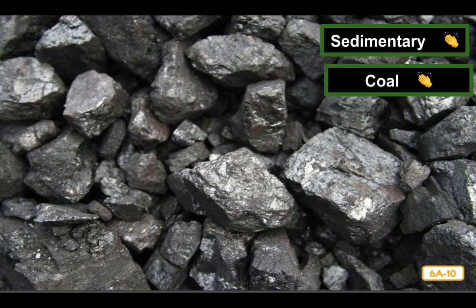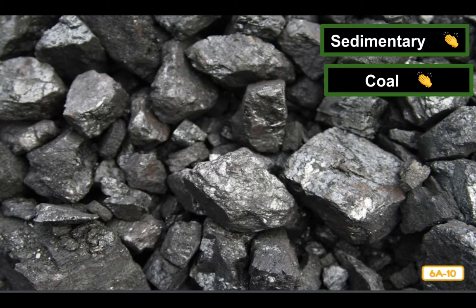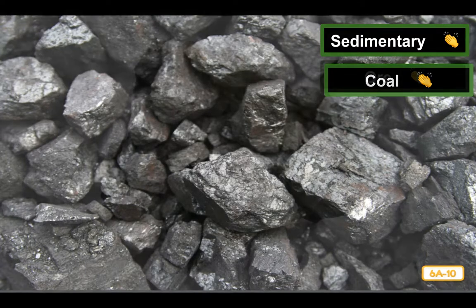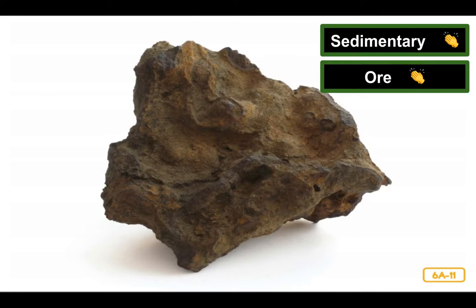Coal is a type of sedimentary rock that comes from decayed plants that have been under pressure for many years. Decayed plants are plants that have died and whose remains are naturally broken down over time and gone back into the soil. Coal is an important energy source — people burn coal to create electricity for homes and to power machines in factories. People get coal and other important rocks, minerals, and metals by mining them from the earth, such as by digging a mineshaft deep down into the earth. Another sedimentary rock is iron ore. Ore is a rock that contains valuable minerals or metals. Iron ore is the source of iron, a strong metal used to make steel — which in turn is used to build bridges, cars, buildings, tools, and other things you use every day.